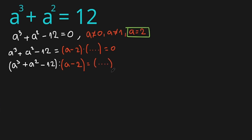Let's clean this up and use long division. When we divide a cubed by a, we get a squared. Now I'm going to multiply a squared by (a minus 2), giving us a cubed minus 2a squared.